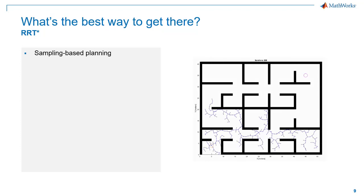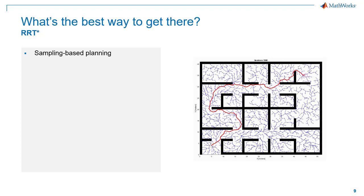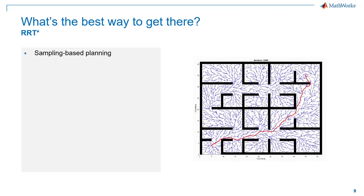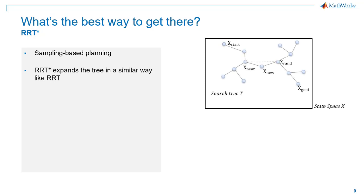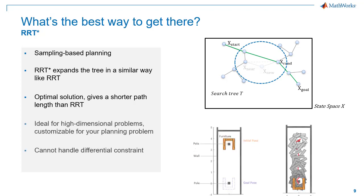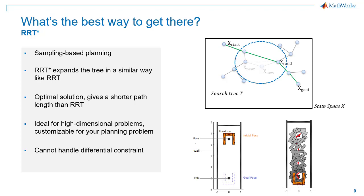The RRT algorithm gives a valid path, but not necessarily the shortest path, which brings us to RRT*. RRT* is an optimized variant of RRT. It is similar to RRT in how it expands the tree, but it rewires the tree within a given search radius and always tries to find a shorter path from the randomly sampled node back to the start. This makes RRT* give an optimal solution, making it even more feasible for high-dimensional problems. While RRT* finds the shortest path with fewer nodes, it is not suitable for non-holonomic vehicles as opposed to RRT. RRT is capable of handling differential constraints, so it depends on your application to figure out which algorithm is more suitable. In the further session, YJ will also cover bi-directional RRT and explain how that works for robot manipulators.